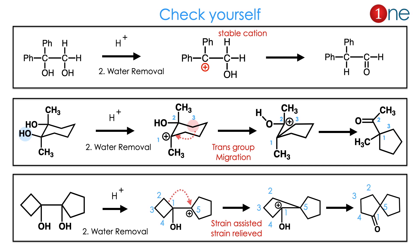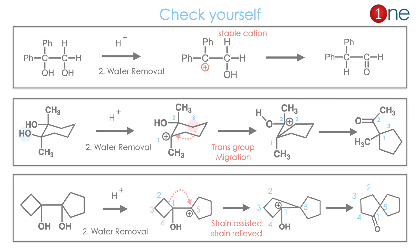Here are some problems to practice yourself. You have to always think of the stable carbocation, and in a rigid system, the trans group always migrates, or strain is always relieved during the reaction. Practice by working through the given examples.